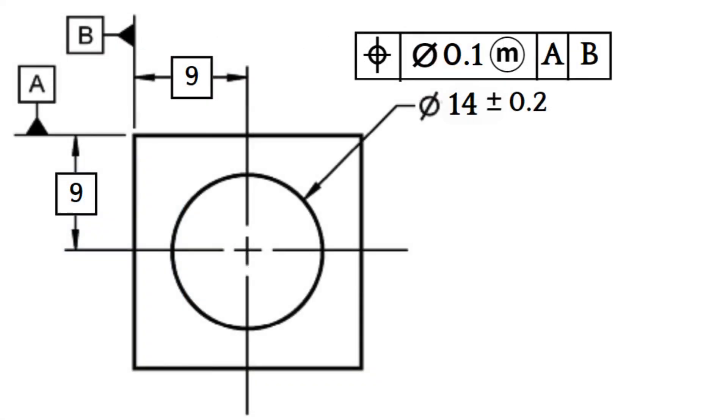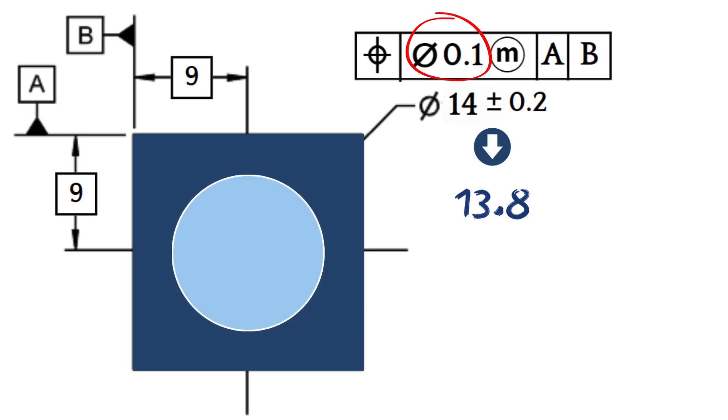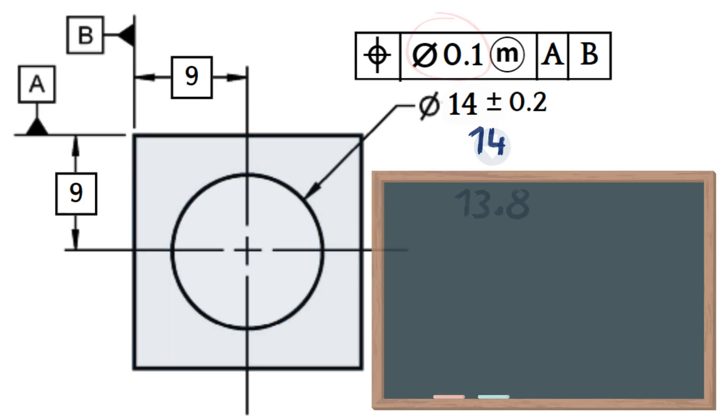In our case, it means that the 0.1 position tolerance is linked to the case where the bore is 13.8mm. Why 13.8? Because when the bore is at its minimum size, the part has more material. So let's re-evaluate the position tolerance, but this time around with MMC.